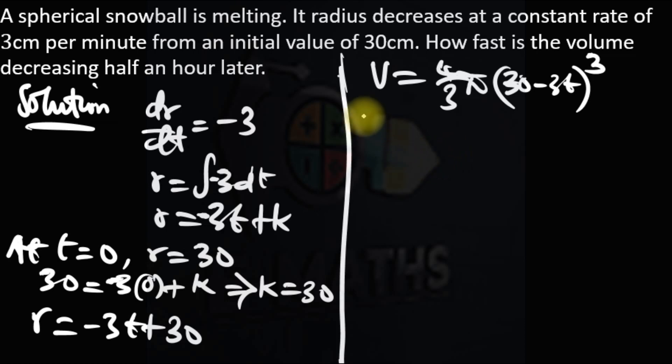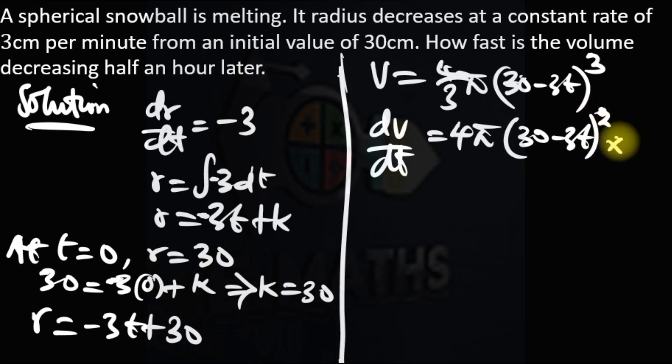We're asked to find the rate at which the volume is decreasing, so we need to find dV/dt. We differentiate this: we have 4 pi times 30 minus 3t raised to power 2, times minus 3. We are using chain rule of differentiation, which is minus 12 pi times 30 minus 3t raised to power 2.